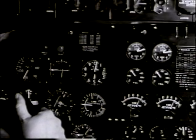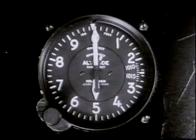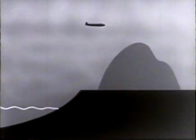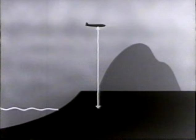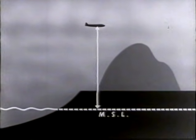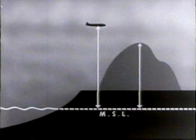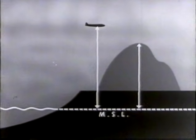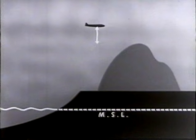A pilot requires three distinct types of indication from his altimeter. First, he wishes to know his altitude, that is, his vertical distance above mean sea level. The elevation of mountains and other obstacles shown on his chart is measured from mean sea level. So by subtracting this elevation from his altitude, he can determine his distance above the terrain.